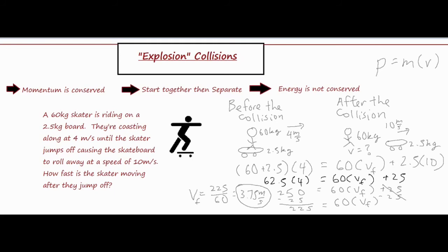Now that we have our final answer, let's make sure that velocity makes sense. The person was going four meters per second initially, so when they kick the skateboard to the right they get an equal and opposite force to the left. Because the skateboard is gaining momentum, the person has to lose momentum to keep momentum conserved. Their velocity should decrease some but not dramatically, since the skateboard is only 2.5 kilograms — and indeed it decreased slightly from four to 3.75 meters per second, which makes sense.